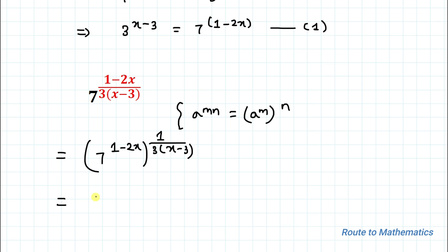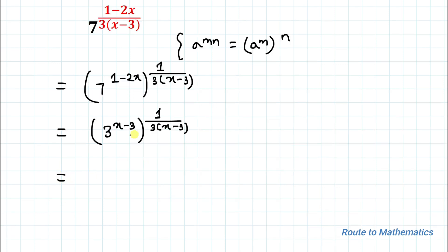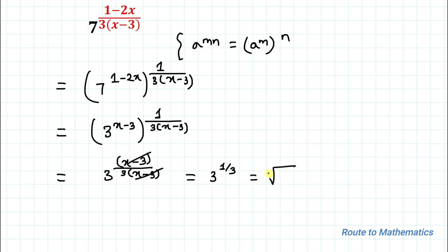Putting the value in, we have 3 to the power (x minus 3) multiplied with 1 by 3 to the power (x minus 3). Opening the bracket we have 3 to the power (x minus 3) divided by 3 multiplied with (x minus 3). These two terms cancel out, so we have 3 to the power 1 by 3, which equals cube root of 3. That is our answer.